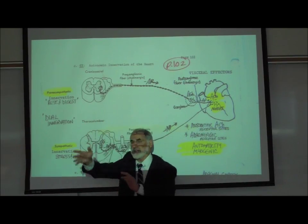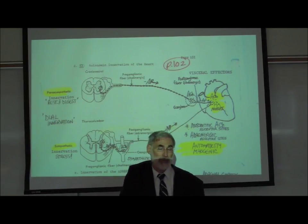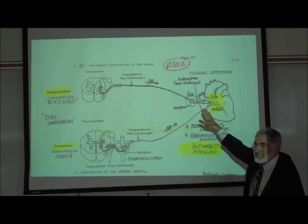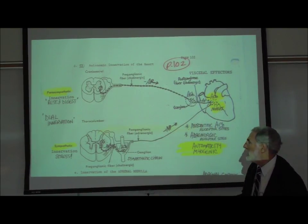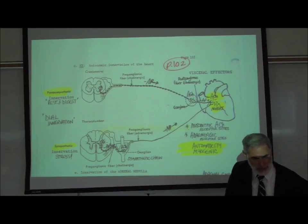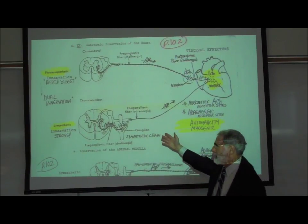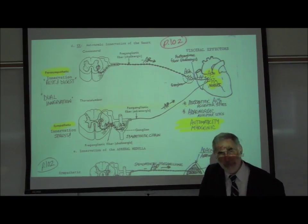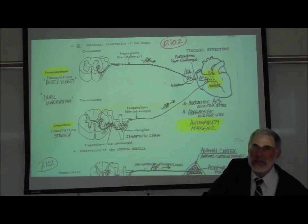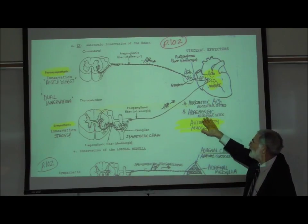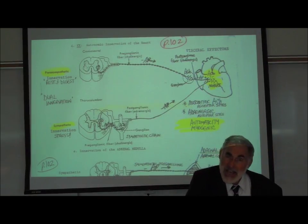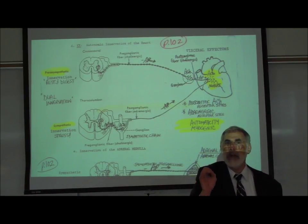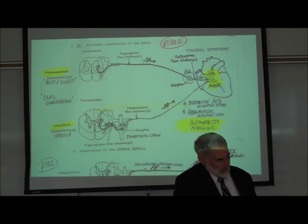Parasympathetics control the internal organs including the heart, and they rest and digest. They release the neurotransmitter acetylcholine onto the heart, which activates the muscarinic acetylcholine receptor sites. On the other hand, sympathetic autonomic motor neurons are activated during states of stress and release the neurotransmitter norepinephrine, an adrenaline-like neurotransmitter that activates the adrenergic receptor sites on the heart — specifically the beta-1 adrenergic receptor sites.